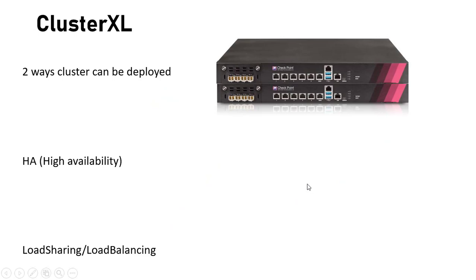There are two ways a cluster can be deployed. The first one is called high availability. Two technologies you can implement here: the first one is VRRP, Virtual Router Redundancy Protocol — it's a common clustering protocol that other vendors use, and Checkpoint can work in that mode as well. The second mode is called New HA mode, designed by Checkpoint, and it's mostly used in customer production environments. Two devices: one device passes 100% of the traffic, the second device is on standby. If something happens to the first device, the second device takes over all of the traffic.